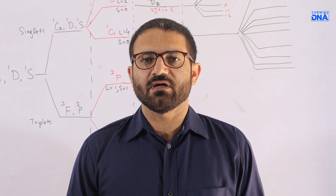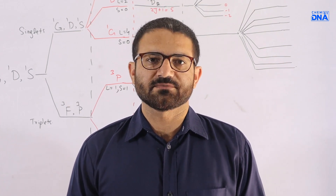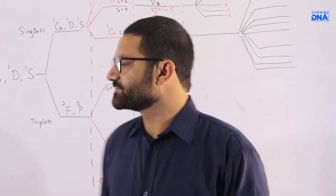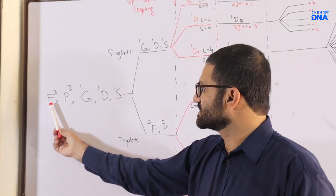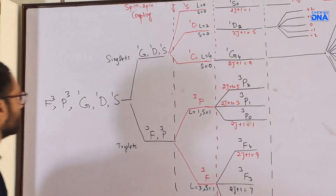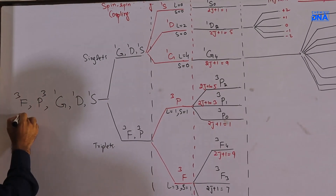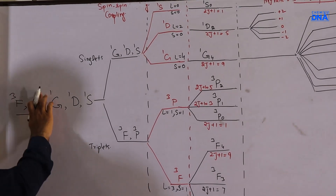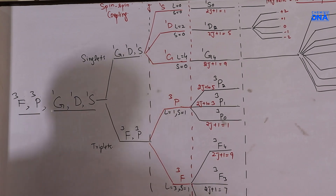As an example, we have a d2 system which contains the following spectroscopic terms: ³F, ³F, ³F, and ³P — these are the triplet terms with respect to spin multiplicity — and there are also singlet terms.